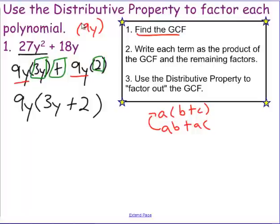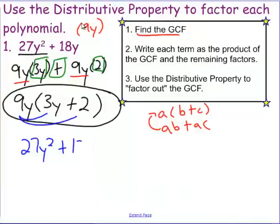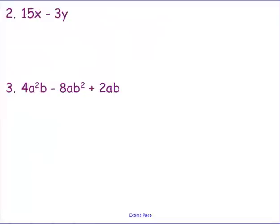The nice thing about factoring is we can always check our answer using the distributive property. 9y times 3y and 9y times 2 should get us back to where we started — and if you distribute that out, it definitely does. So again, we are using the distributive property backwards and we are using greatest common factors.